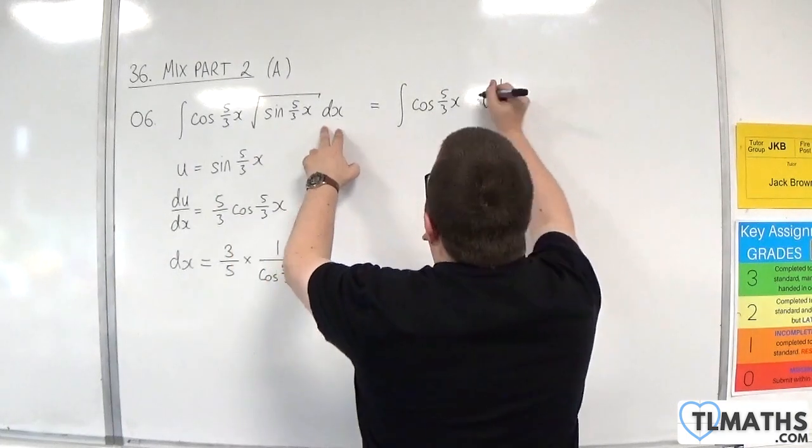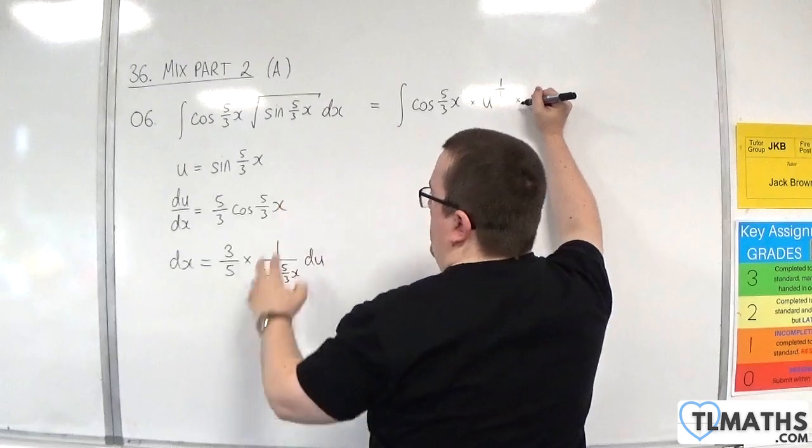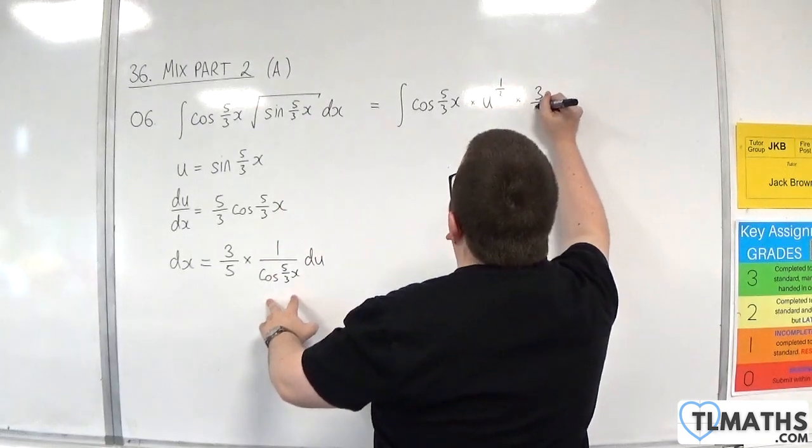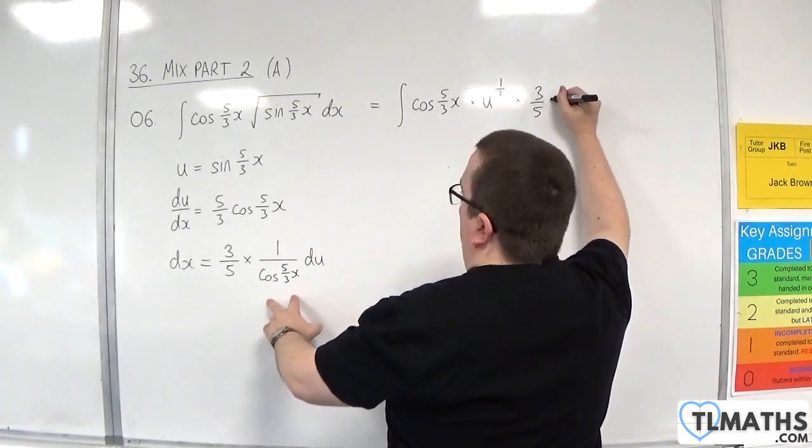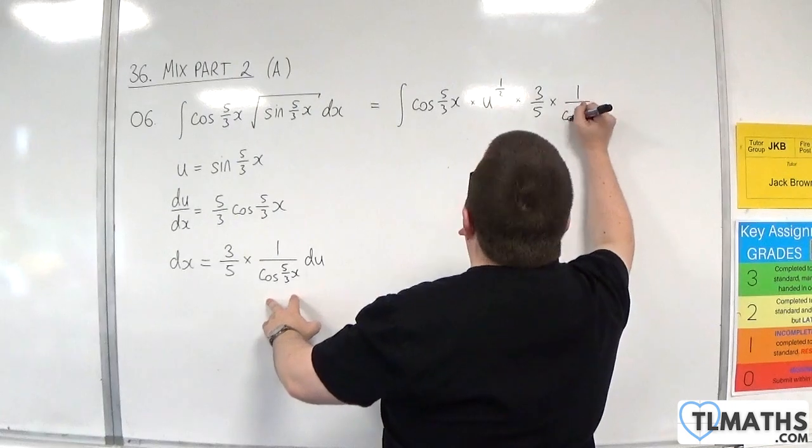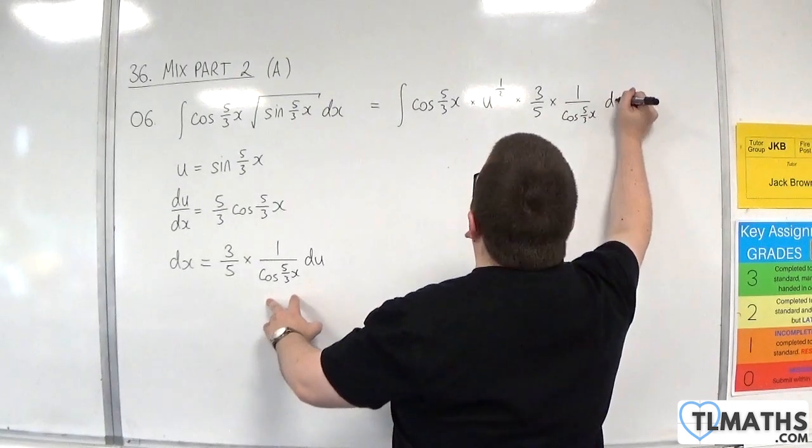And the dx I'm going to rewrite like this. So 3 fifths times by 1 over cosine of 5 thirds x du.